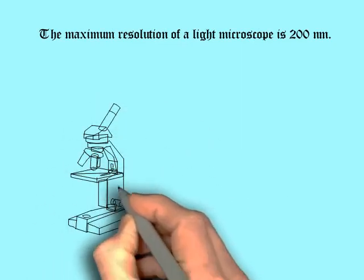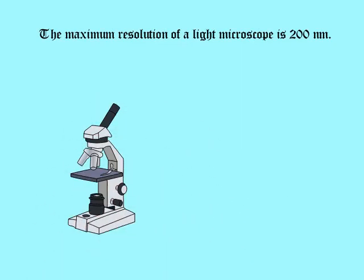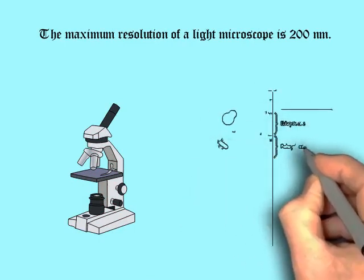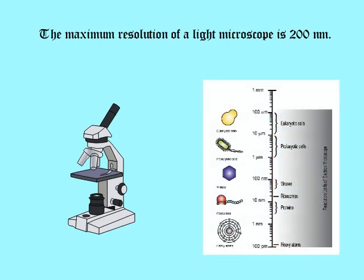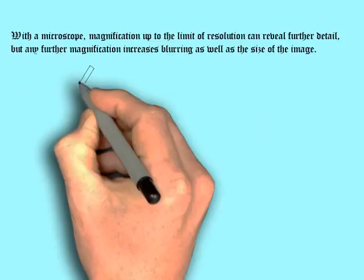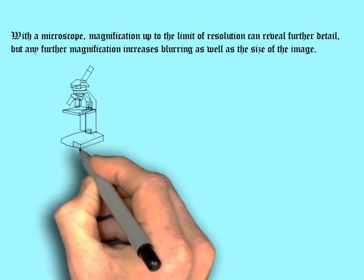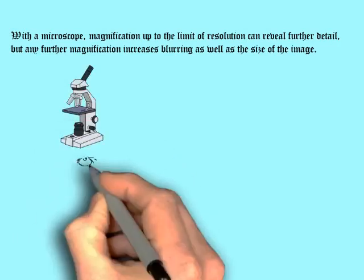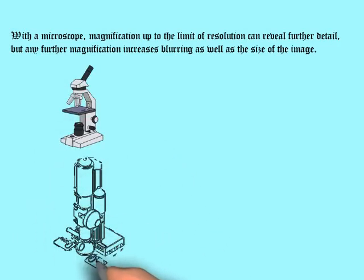This means that if two points or objects are closer together than 200 nanometers, they cannot be distinguished as separate with the microscope. Magnification up to the limit of resolution can reveal further detail, but any further magnification increases blurring as well as the size of the image.